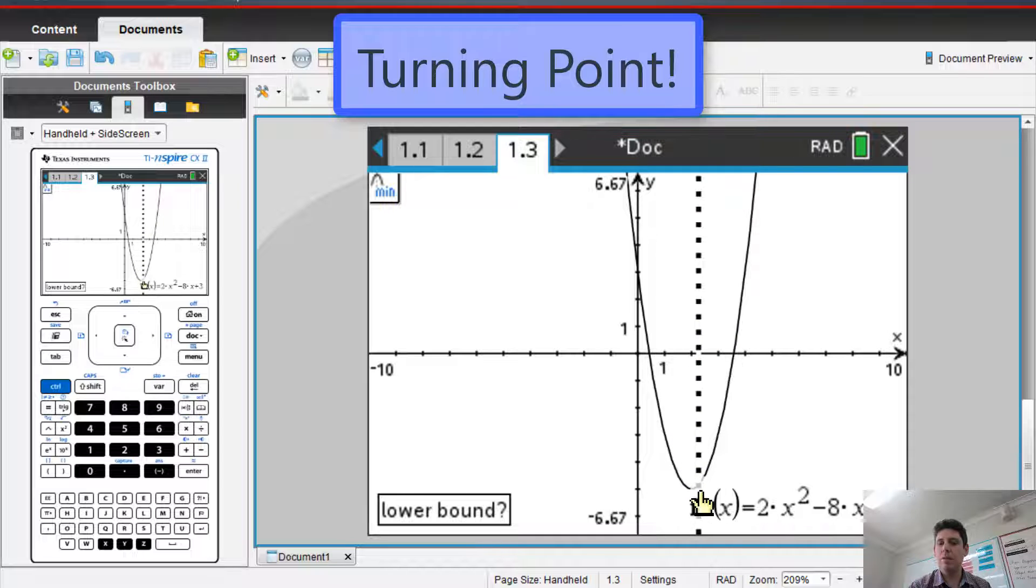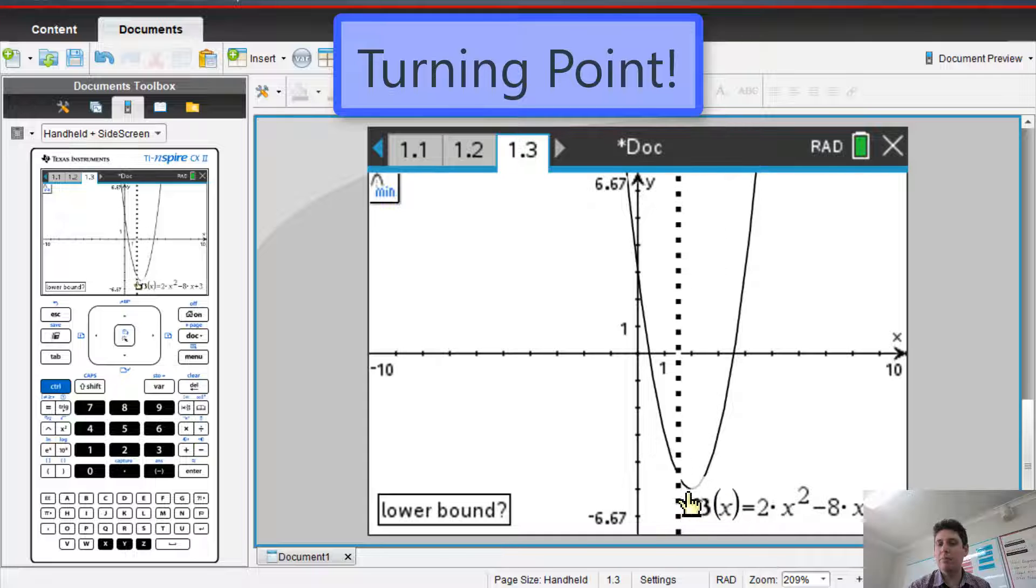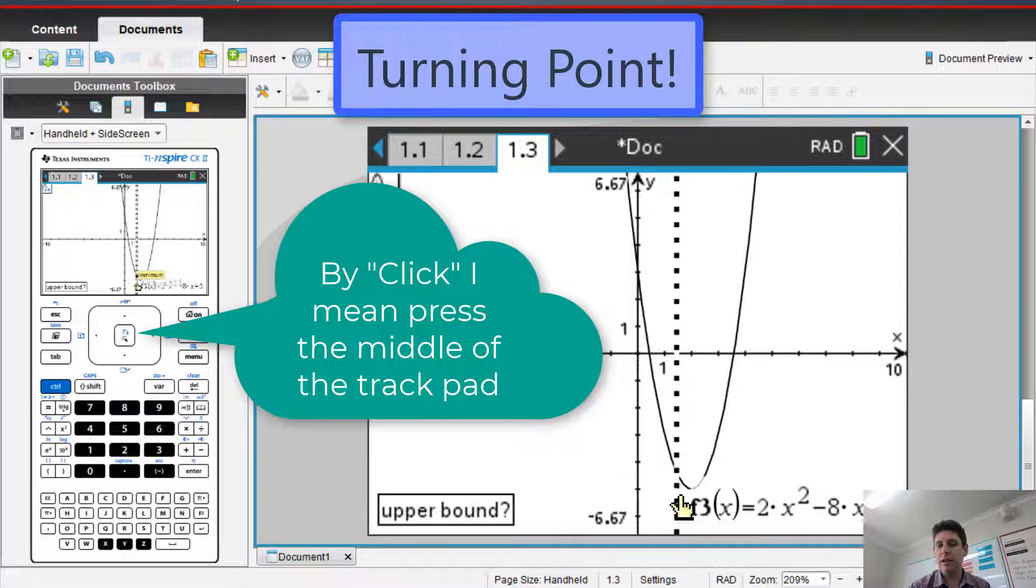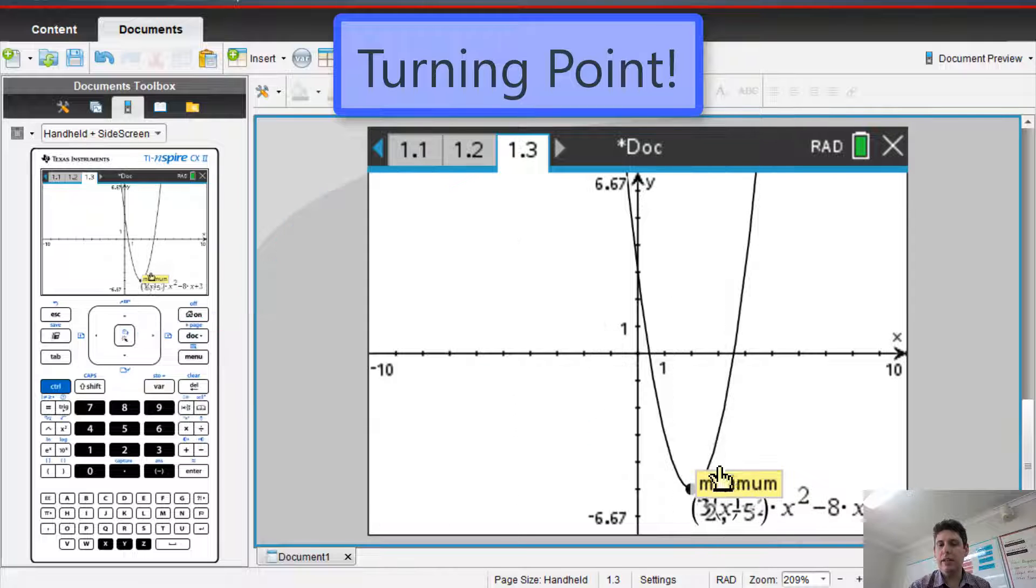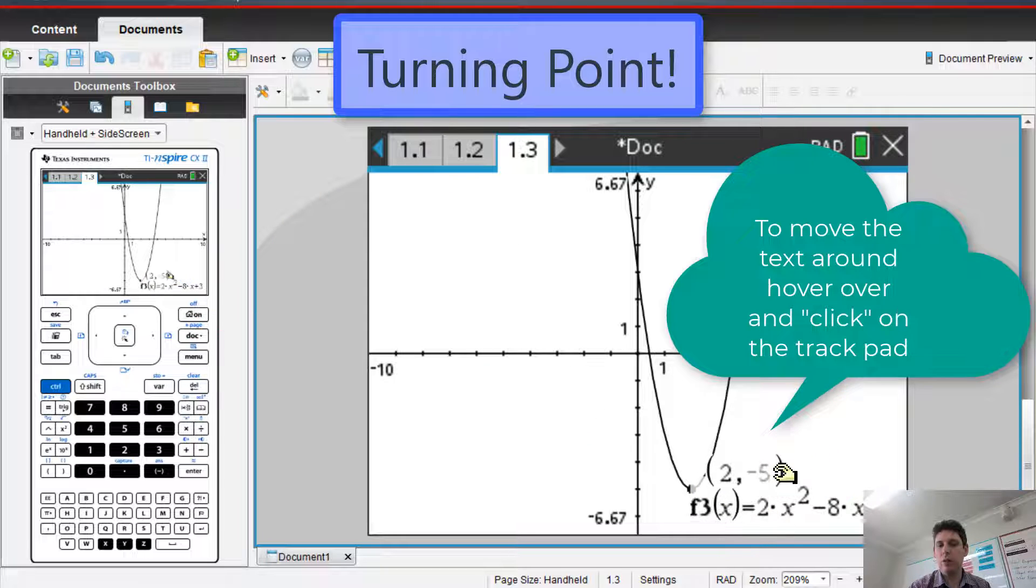So you click minimum and we want to create an area around the points. So you click and then click again. So move your cursor across. Click again and it's created your point.